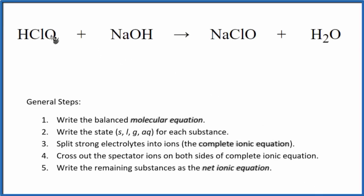In this video we'll write the balanced net ionic equation of HClO plus NaOH. This is hypochlorous acid plus sodium hydroxide. First thing with net ionic equations, we balance the molecular equation. In this case the molecular equation is already balanced, so we're done with that.